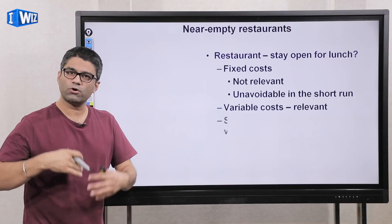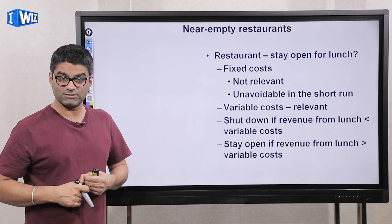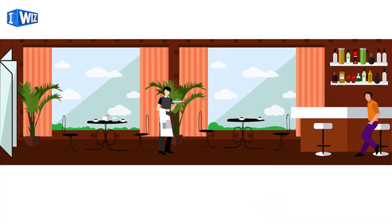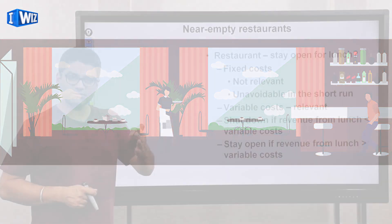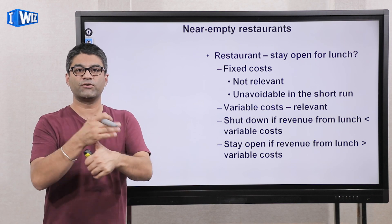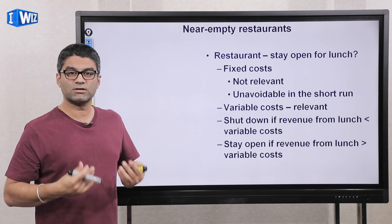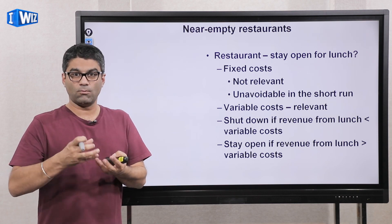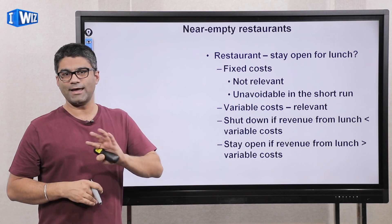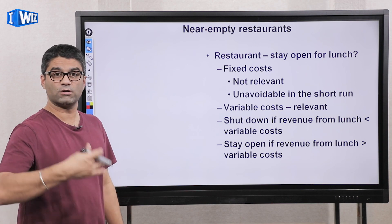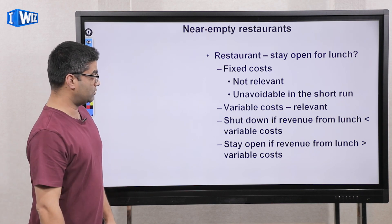If you go to a restaurant and there's nobody there, why is the restaurant owner still keeping it open? The answer is that in the short run, the restaurant owner has certain fixed costs — they've already paid the lease and paid for equipment they cannot get rid of overnight. So as long as they can recover their variable costs — ingredients, cooking, servers — they will continue to stay open, because it's better to earn a smaller loss by producing and recovering variable costs than to completely shut down.